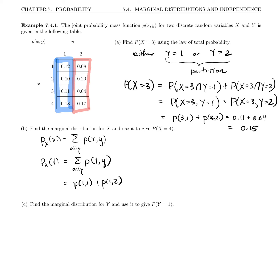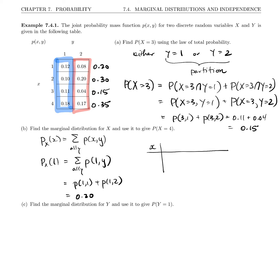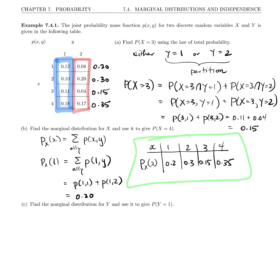Typically what people do is just add across each row. So 0.12 plus 0.18 is 0.2. Then 0.1 plus 0.2 is 0.3. The x equals 3 row we found before is 0.15, and the last is 0.35. So we've created a new table: x can be 1, 2, 3, or 4, with marginal PMF values 0.2, 0.3, 0.15, and 0.35. This is the marginal distribution for x.